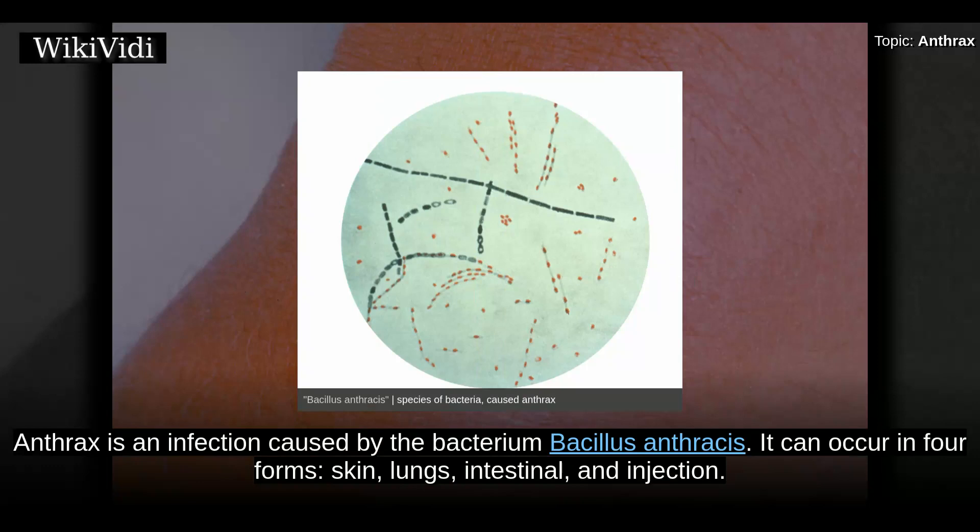Anthrax is an infection caused by the bacterium Bacillus anthracis. It can occur in four forms: skin, lungs, intestinal, and injection.